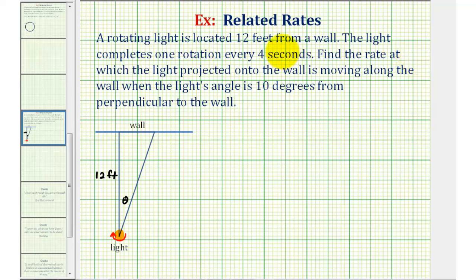A rotating light is located 12 feet from a wall. The light completes one rotation every four seconds. We want to find the rate at which the light projected onto the wall is moving along the wall when the light's angle is 10 degrees from perpendicular to the wall.